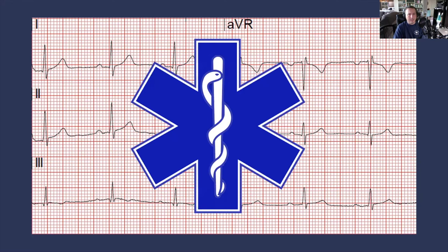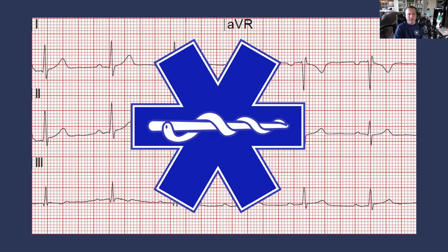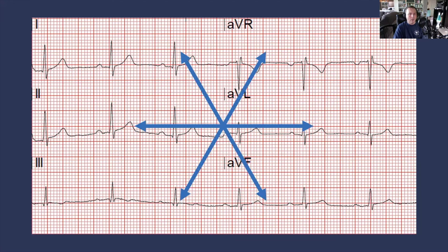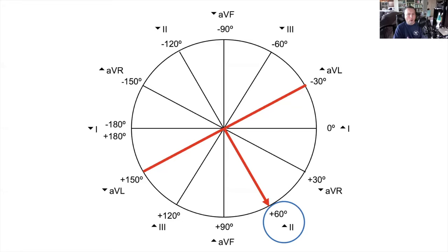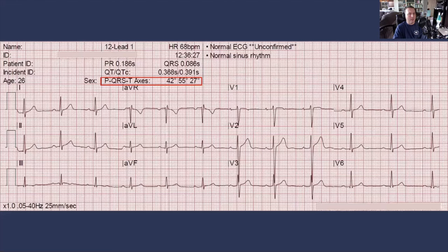Because the polarity of the QRS complex in lead II is positive, we know that the QRS axis in the frontal plane is about 60 degrees using the hexaxial reference system. If we look at the computerized measurement, the computer is measuring the QRS axis at 55 degrees. So we've just nailed the QRS axis within five degrees at a glance.